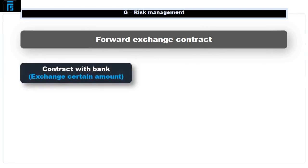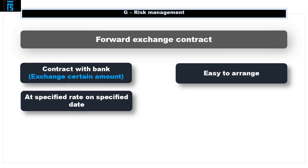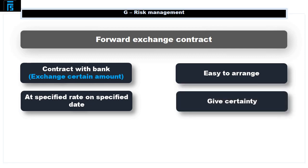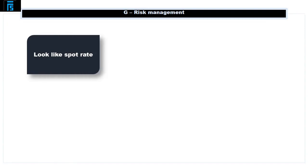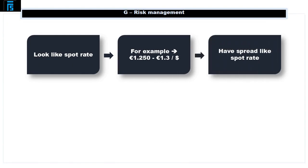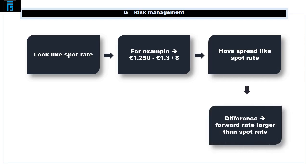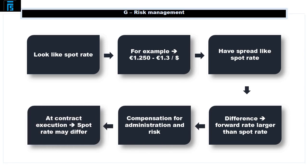A forward contract is a contract agreed with the bank to exchange a certain amount of foreign currency at a specified rate on a specified date. These are common in practice because they are easy to arrange — it's a conversation with the bank — and they give certainty. From the moment the contract is signed you know exactly what the exchange rate is going to be for that future transaction. The banks will quote a price, and forward rates also have a spread like spot rates, with a larger difference between the two prices as the bank extracts more compensation for the administration and risk they take on.